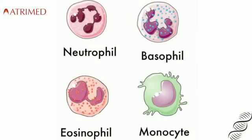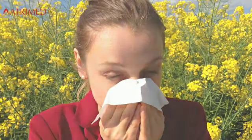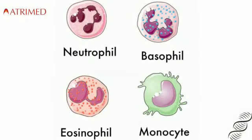Basophils resemble mast cells but are different in origin. They are highly granulated and can induce a heavy load of histamines, leading to acute inflammation and anaphylaxis. Eosinophils are useful against nematodes, commonly known as intestinal helminths or worms. Eosinophils can also be involved in respiratory allergic reactions. Both basophils and eosinophils and their actions are still poorly understood.